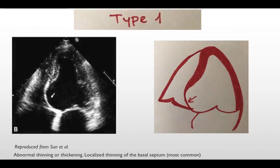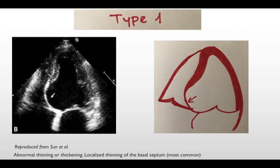Let's see how they look in echo. This is an illustration on the right side showing how there will be abnormal thinning, localized thinning of the basal septum. You can see on the left side the 2D image, which shows clearly the thinning of the basal part of the septum. This is the most common type of sarcoid heart involvement, reported to be around 90% of cases.